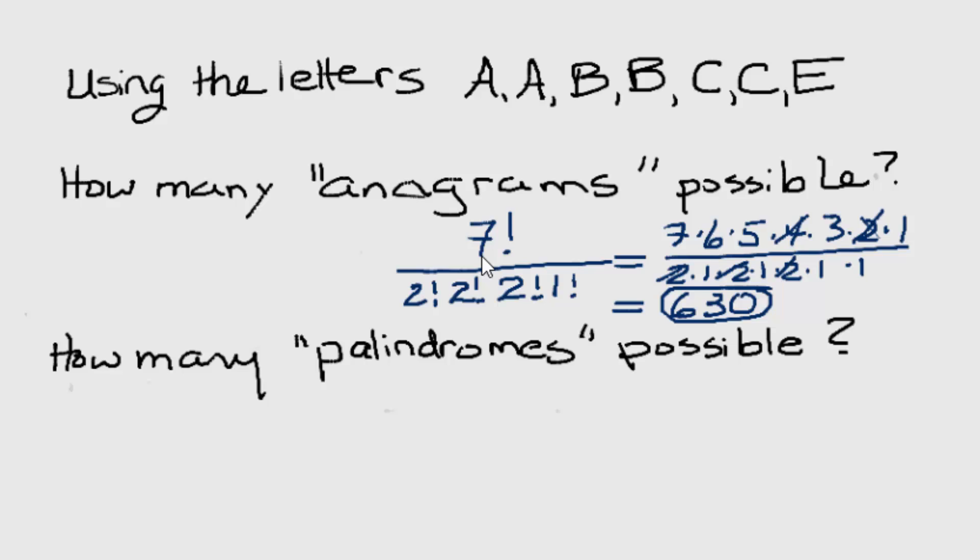Now let's talk about palindromes. Palindromes are different from anagrams. An anagram of those seven letters might be A, B, B, C, E, C. Any arrangements possible, I can just scramble the letters into any order. But a palindrome must read the same backwards and forwards.